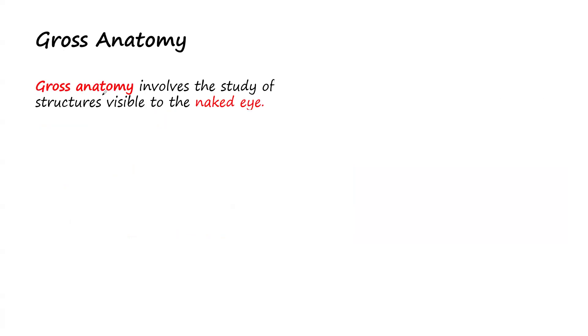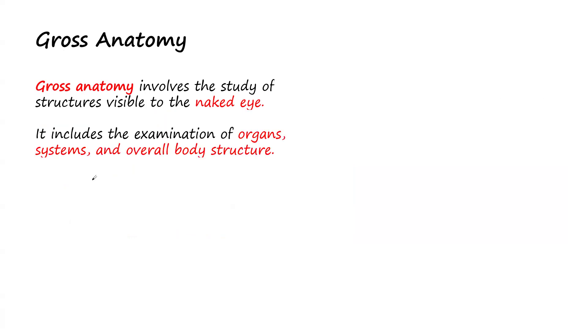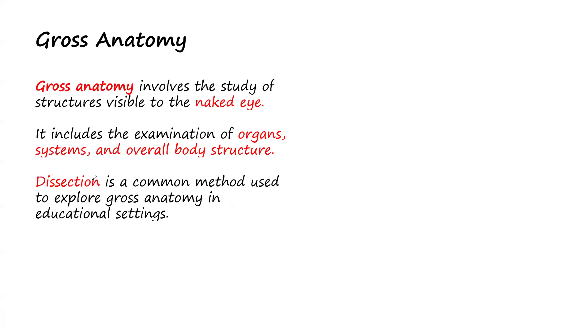What is gross anatomy? Gross anatomy involves the study of structures visible to the naked eye. It includes the examination of organs, systems, and overall body structures. In gross anatomy you can examine different organs of the body such as the kidney and liver, because these are organs you can see with the naked eye. You can also examine systems like the cardiovascular system and the overall body structure.